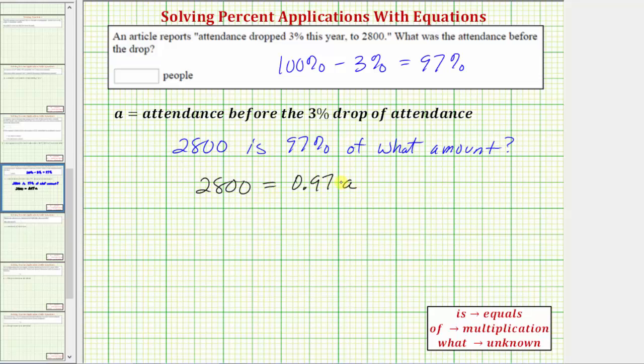Hopefully this makes sense. On the right side, 0.97 times a means ninety-seven percent of some amount, and we have equals 2,800.